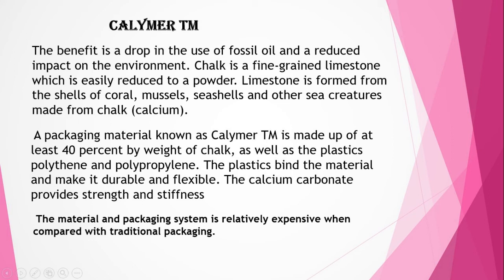The next material is Calimer, a chalk-based material. The benefit of using Calimer includes a reduction in the use of fossil oil and reduced environmental impact. Chalk is a finely grained limestone usually reduced to a powder, formed from the shells of corals, mussels, sea creatures, and other calcium-based organisms. Calimer is made up of at least 40% by weight of chalk combined with plastics such as polyethylene and polypropylene. The plastic component binds the material and makes it durable and flexible, while calcium carbonate provides strength and stiffness. However, the material is relatively expensive compared with traditional materials.